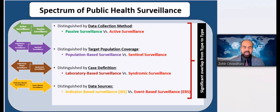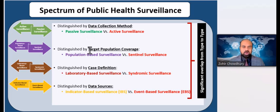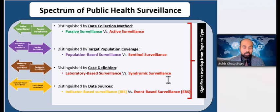If we look at the various types of public health surveillances, there is significant overlap among some of them. Depending on the data collection method, we can distinguish surveillances as active versus passive. Depending on what type of population you are targeting, it can be population-based or sentinel-based surveillances. Distinguished by the specific case definition, some are laboratory-based or syndromic surveillances, and depending on the data source, indicator-based or event-based surveillances.